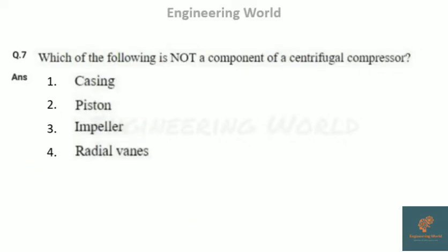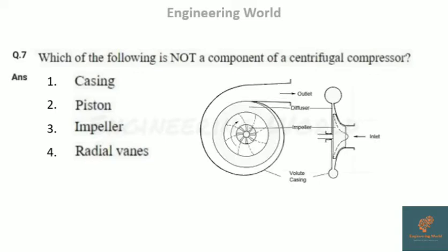The next question: which of the following is NOT a component of a centrifugal compressor? Options are casing, piston, impeller, and radial vents. A centrifugal compressor has an impeller, radial vents, and a casing also known as the radial casing. There is no piston in a centrifugal compressor — the piston is present in a reciprocating compressor. So the answer is piston.